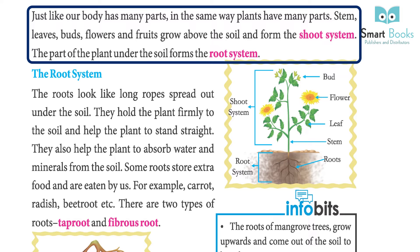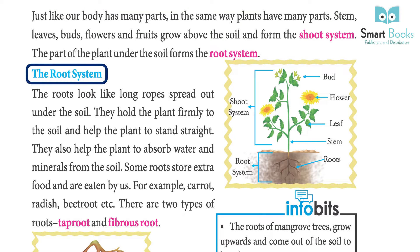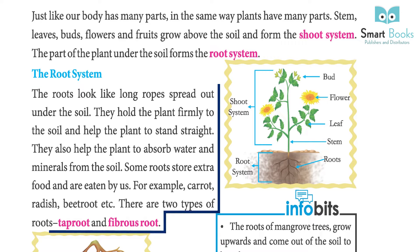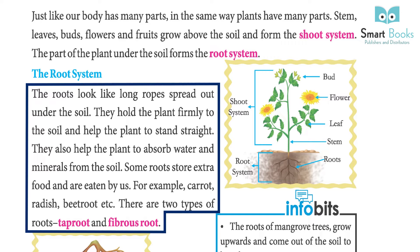The part of the plant under the soil forms the root system. The roots look like long ropes spread out under the soil. They hold the plant firmly to the soil and help the plant to stand straight. They also help the plant to absorb water and minerals from the soil.